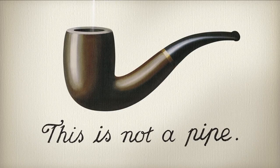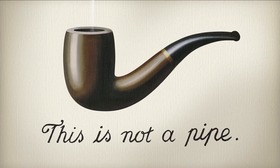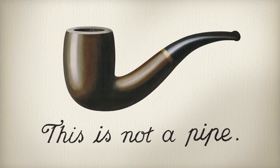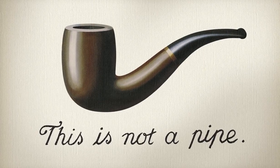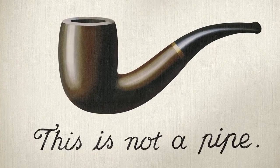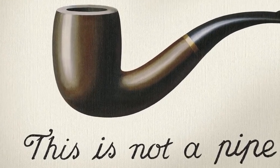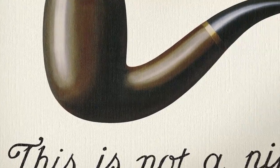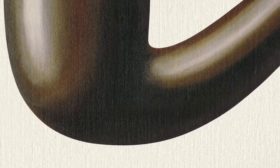When it was pointed out to Magritte that what he had created was in fact a pipe, he replied: try filling it with tobacco then. So this is not a pipe, but a painting of a pipe — a thin layer of pigments suspended in oil over a piece of canvas.